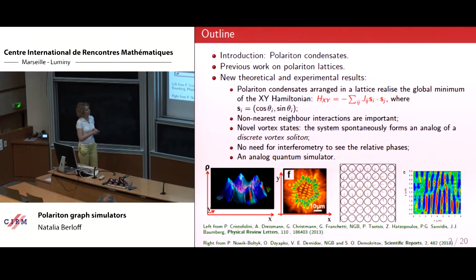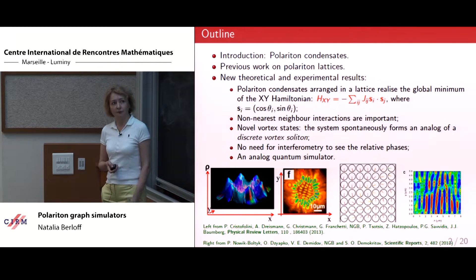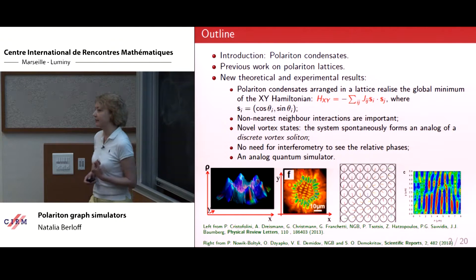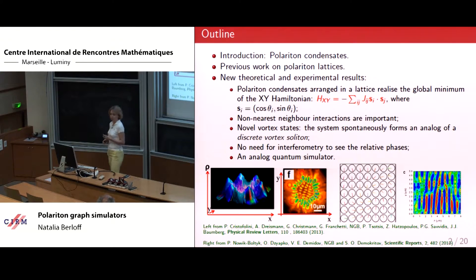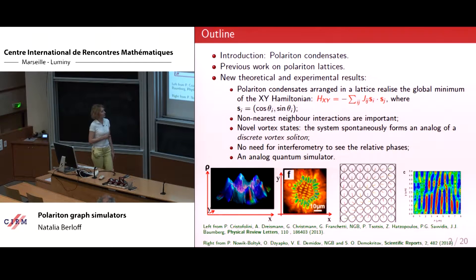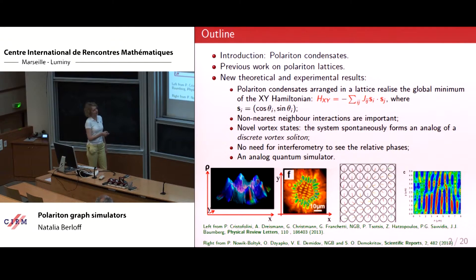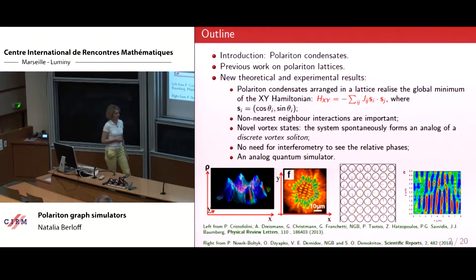This is a cartoon of the density for an arrangement of, for instance, six condensates, such that they interact and establish a difference of phases. Of course for the condensate the individual phase varies with time, but the phase difference is locked. The phase difference between the condensates can be read off, and when we talk about minimization of the XY Hamiltonian, we imagine each spot's relative phase arranged according to the optimally chosen phase configuration.